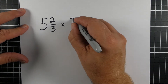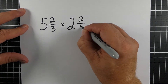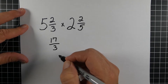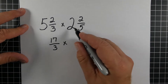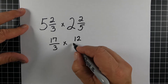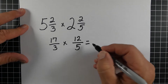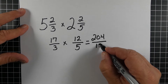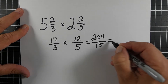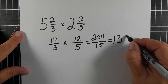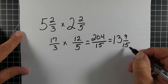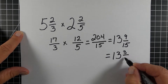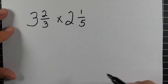In this next problem we have five and two-thirds times two and two-fifths. First, let's write these as improper fractions: this becomes 17-thirds, and two and two-fifths becomes 12-fifths. Once we have that, we multiply straight across — 12 times 17 is 204, three times five is 15. Now we have the division problem: how many times does 15 go into 204? That's 13, with a remainder of nine, so nine is the numerator and 15 is our denominator. Then we simplify it down.